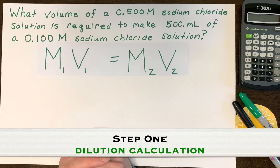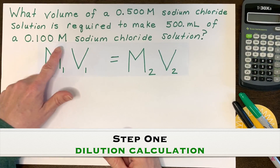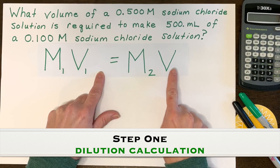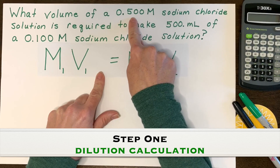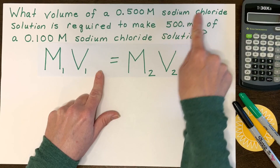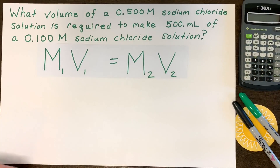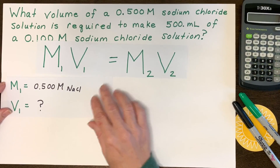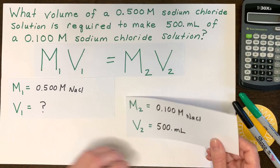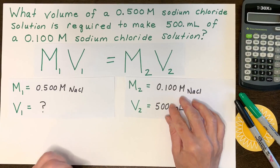The first step is knowing the new diluted concentration you want to make — 0.1 molar sodium chloride, which is M2 — and the volume you want to make, which is V2. You also need the stock solution molarity, M1, which is 0.5 molar sodium chloride. The moles will be equal on both sides, and the solute must remain the same. Write down your knowns: you're starting with 0.5 molar NaCl, and you want to make 500 milliliters of 0.1 molar NaCl.